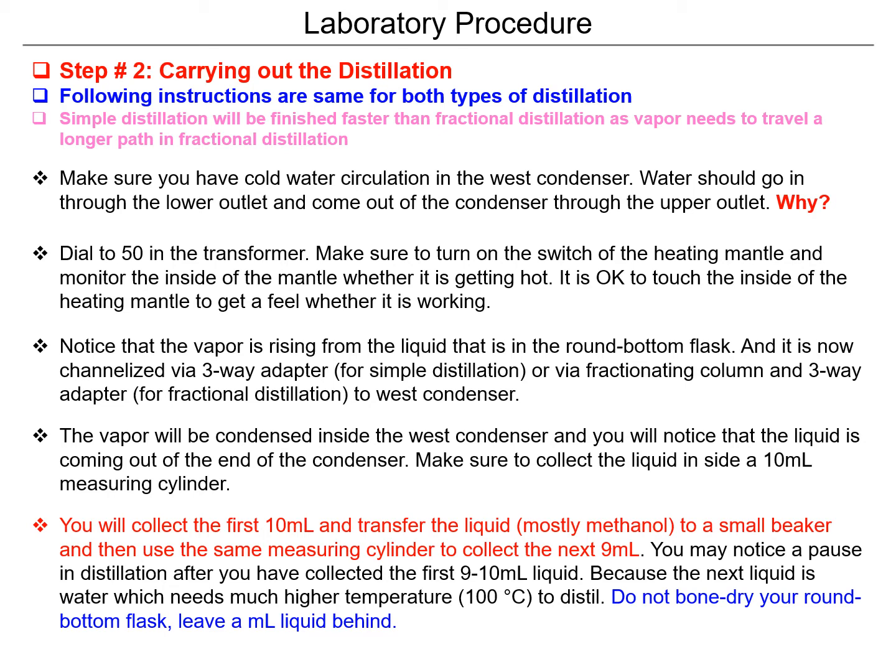Heating mantles have indicator signals — when you turn them on, they give a red light somewhere on the apparatus. But for some other reason they may not, so you can just carefully touch the inside of the mantle — it feels like a wall — and feel that it is warming. If it is warming, then you can be sure the experiment is ready to go.